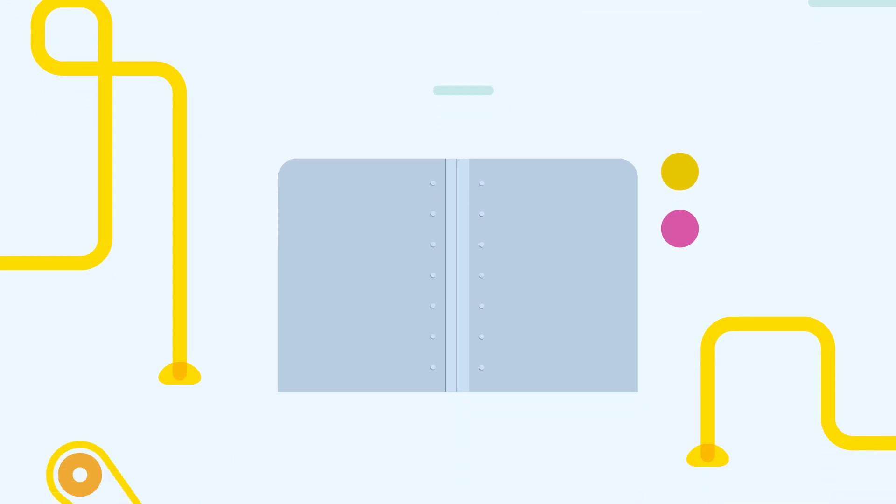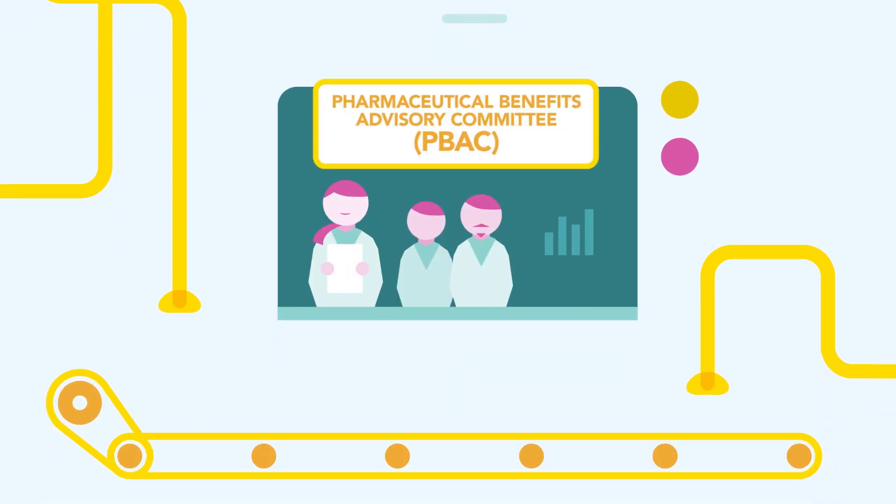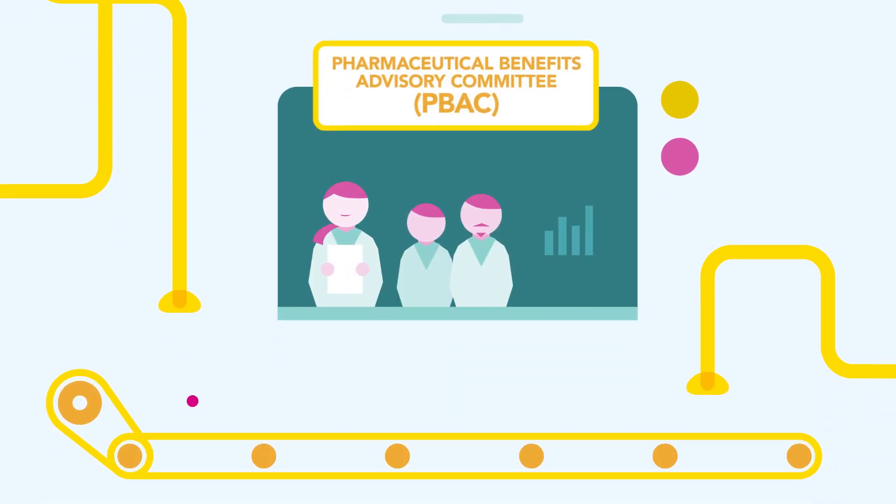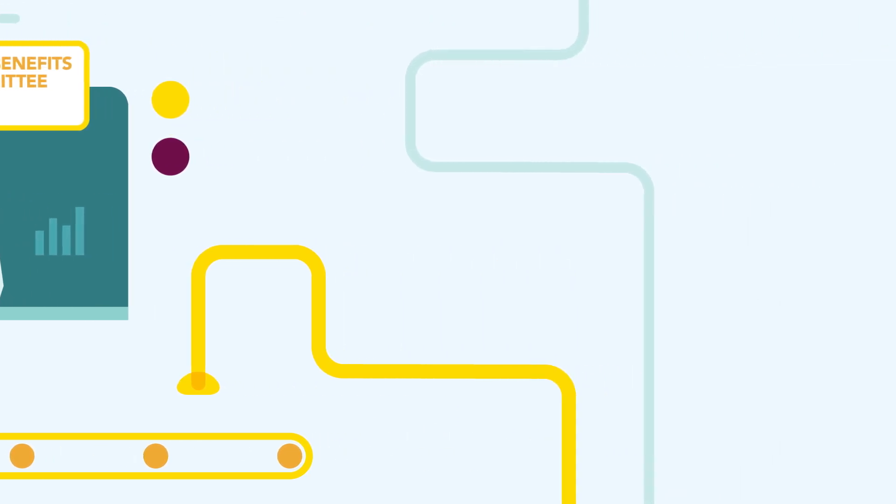The next step is for the Australian Government's Pharmaceutical Benefits Advisory Committee, PBAC, to determine if a medicine is cost effective. The PBAC is made up of healthcare professionals, health economists and consumer representatives. If the PBAC determines that a medicine is efficacious and cost effective, it can then be recommended for inclusion on the Pharmaceutical Benefits Scheme.